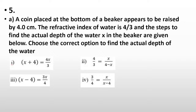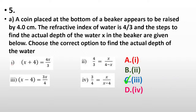Give me the answer for question number five. The correct answer is C, that is the third option: x - 4 = 3x/4. That is going to be the correct answer.